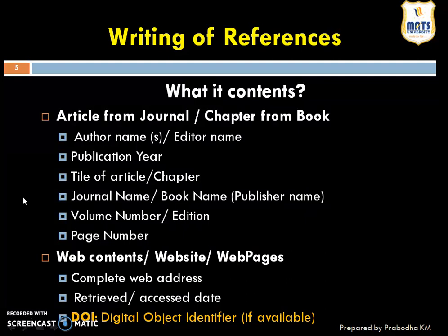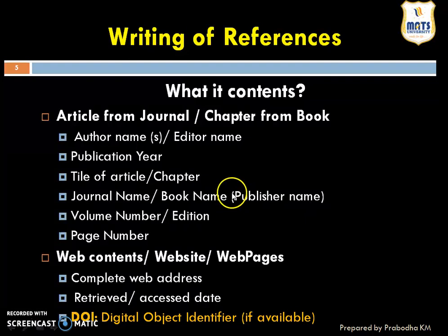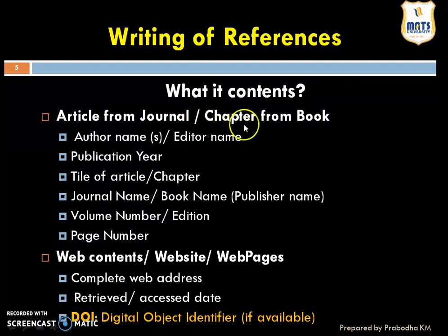Whenever we are referring these things, what are the important pieces of information we need to collect? While referring any article from a journal or book, first we should collect the author names or editor name. The second is the publication year. We also need the title of the article or chapter, the journal name in case of a journal article, and book name in case of a book chapter. In some cases, it can also be a publisher name, volume number or edition number, and page number.